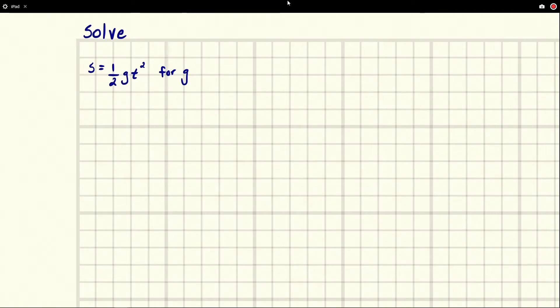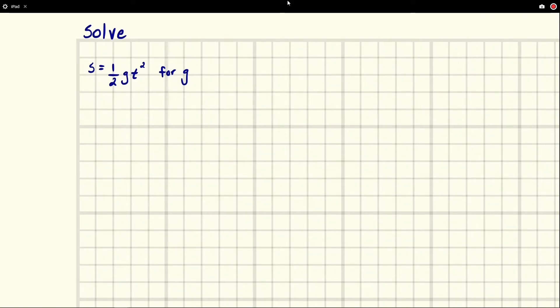It's a useful one to know, and let's go ahead and get this g by itself. We're going to get rid of the t squared first. We notice that this is all just multiplication. The one half is being multiplied by the g and the t squared, so we're just going to divide all that stuff out.